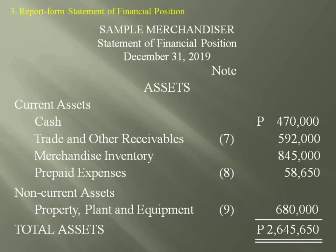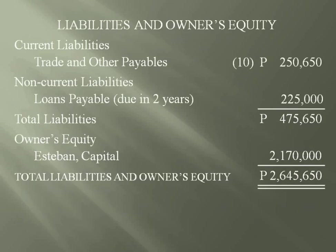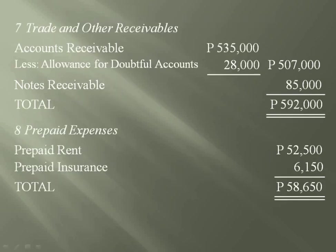Speaking of trading securities, that is another current asset classification which may be included in the statement of financial position. Additionally, a supporting note may not be required if there is only one account name in a classification. For example, if there is only one prepaid expense account such as office supplies, the notes to financial statements may not need a separate note for prepaid expenses. Accountants may simply forward the account name office supplies with its amount directly to the statement of financial position.